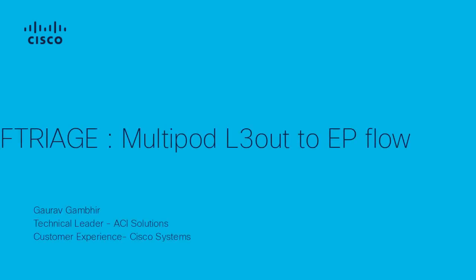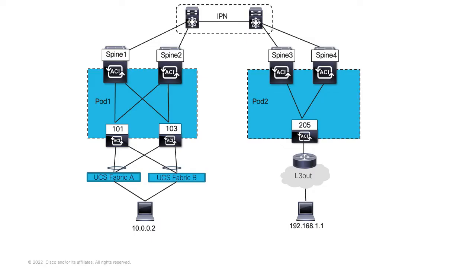Hi, my name is Gaurav Dambir. I'm a technical leader for Cisco ACI Solution Technology in CX. Today I'm going to do a quick demo of Ftriage 2 for ACI multi-pod fabric. Here is the topology with traffic flowing between two hosts — one an endpoint in pod1 and another one connected behind an L3out in pod2.